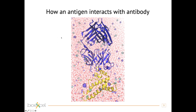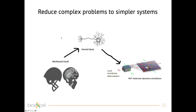When we perform a simulation, the first step is that we have to simplify our problem. For example, we might be asked to understand brain injury. Brain injury comes from a mechanical insult at the macroscopic level, which causes injury at the cellular and axonal level. But we want to understand exactly what happens inside the cell. We cannot simulate the whole cell, nor do we have information on all the molecules inside it. So we start by looking at what happens to the subcomponents of this cell.